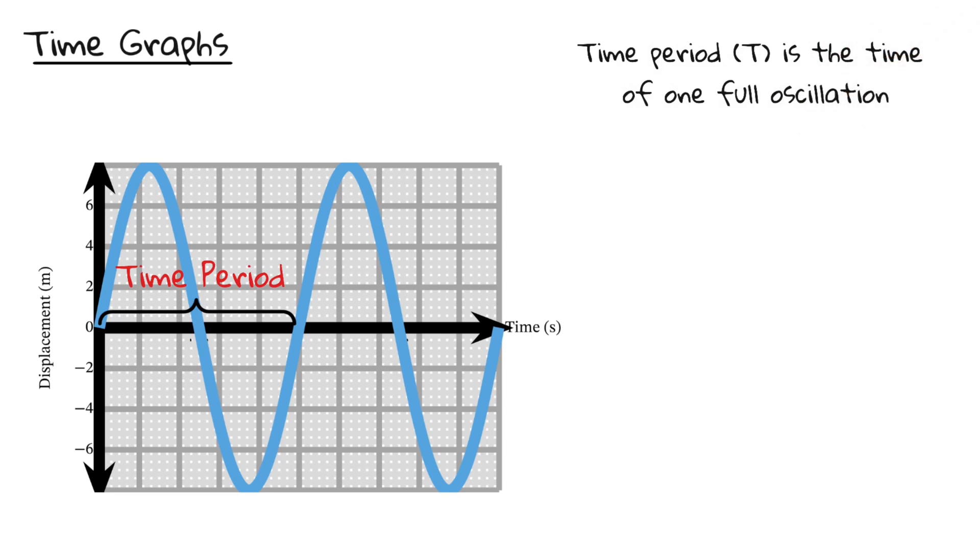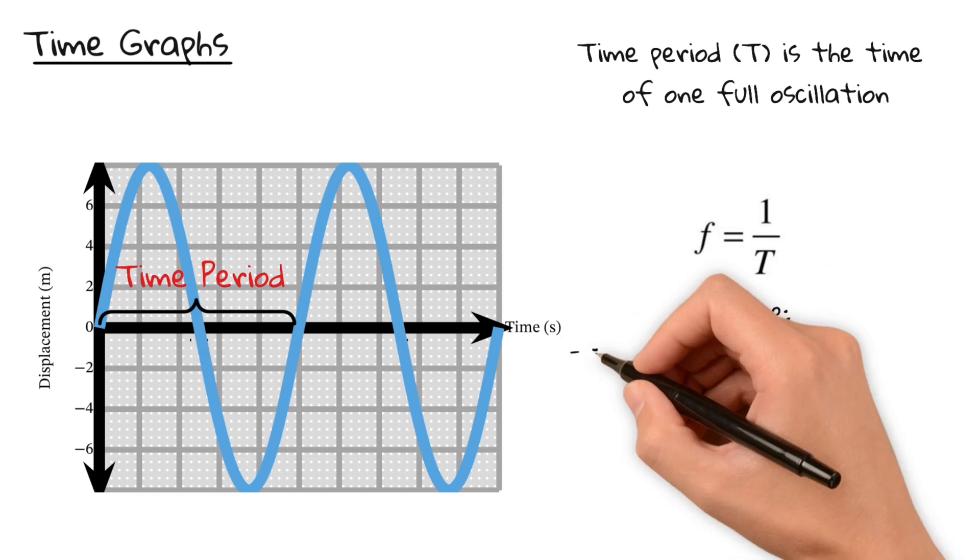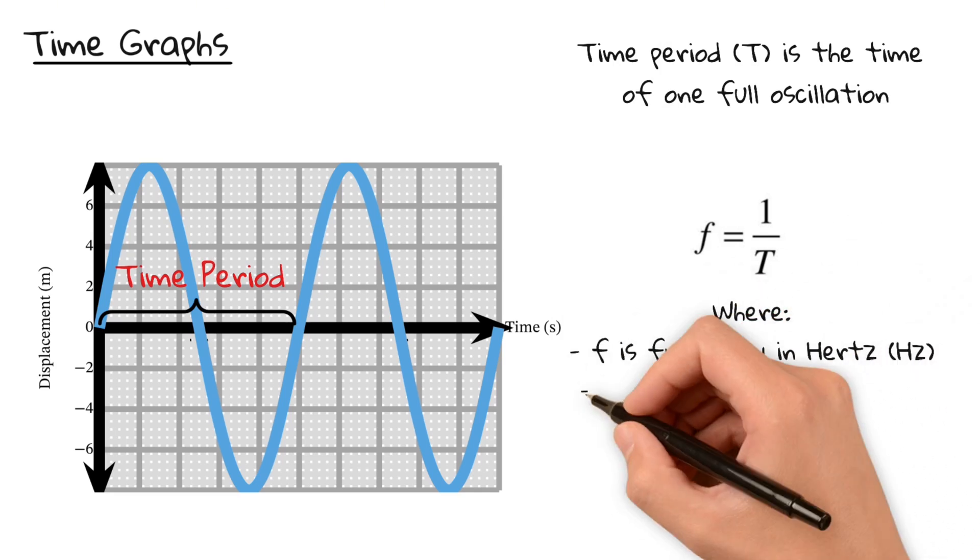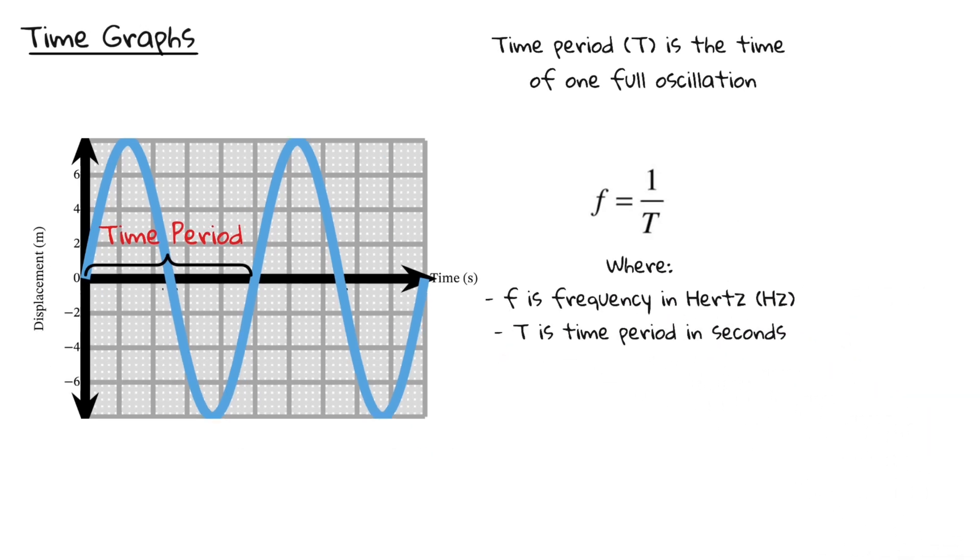From the time period we can calculate the frequency using this formula. Frequency is 1 divided by time period, where f is the frequency in hertz and t is the time period in seconds.